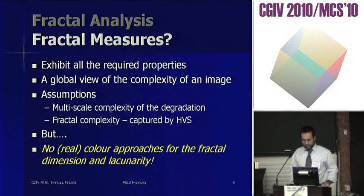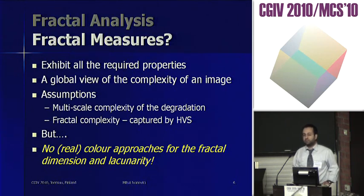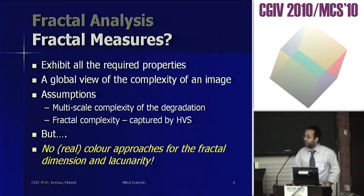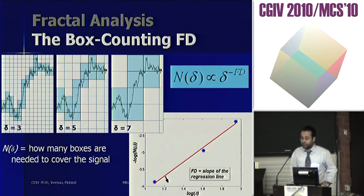It is important to have an objective metric which reflects the human vision system's way of seeing images. We embraced fractal analysis tools based on the assumption that degradation occurs at different scales — for example, the blockiness effect may manifest at both large and small scales. The fractal measures have all the desired properties, but there is an issue: there are no color approaches for fractal dimension and lacunarity computation, which are the two main fractal analysis tools.